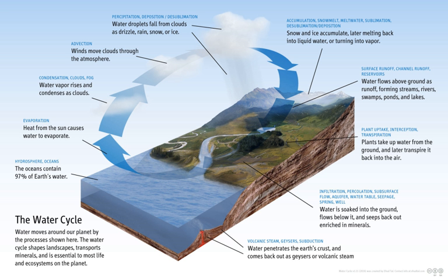During the last global warm spell, about 125,000 years ago, the seas were about 5.5 metres higher than they are now. About 3 million years ago the oceans could have been up to 50 metres higher. The scientific consensus expressed in the 2007 Intergovernmental Panel on Climate Change summary for policymakers is for the water cycle to continue to intensify throughout the 21st century, though this does not mean that precipitation will increase in all regions.